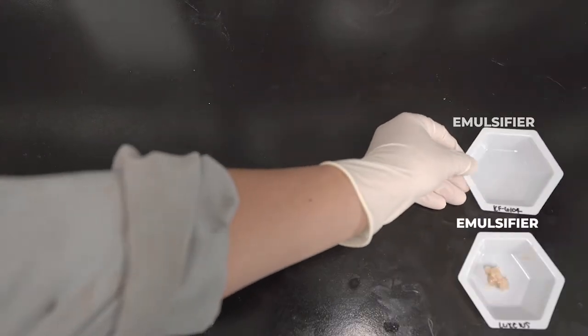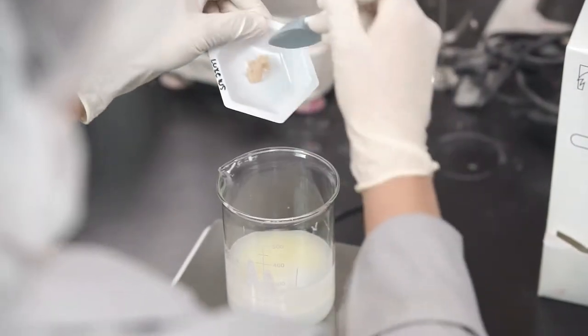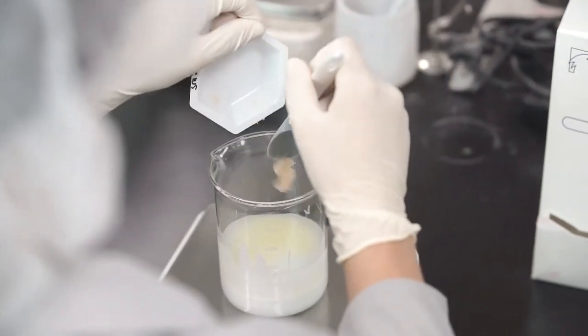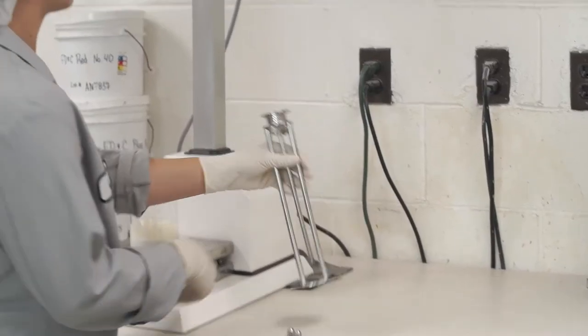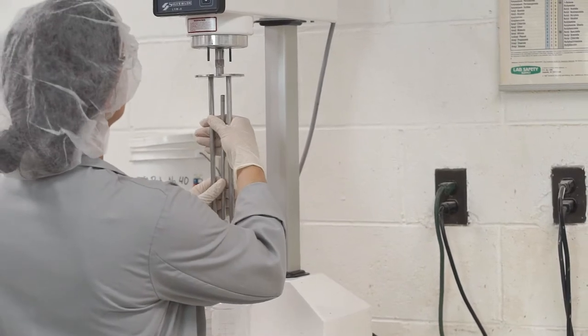Next we add in emulsifiers to stabilize the water and silicone emulsion. We move the oil phase to the homogenizer and mix with good agitation. Please note that the speed adjustment will depend on the lab batch size.